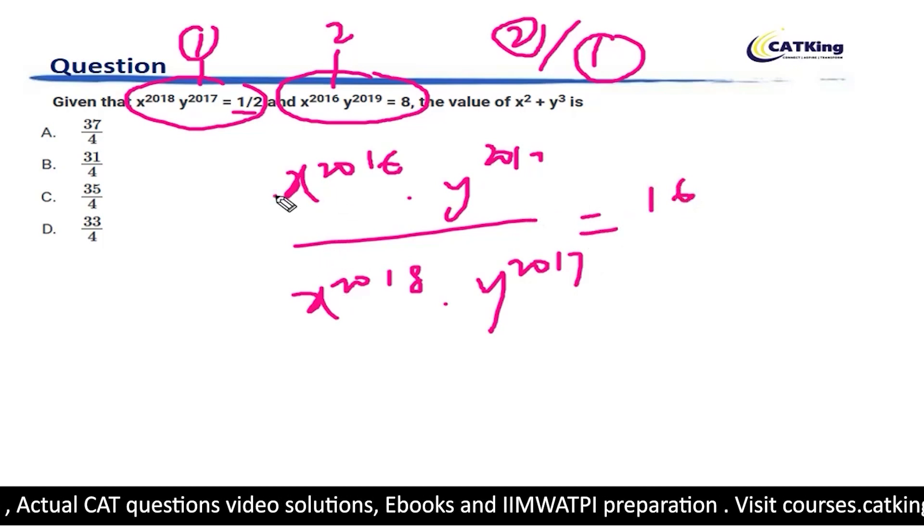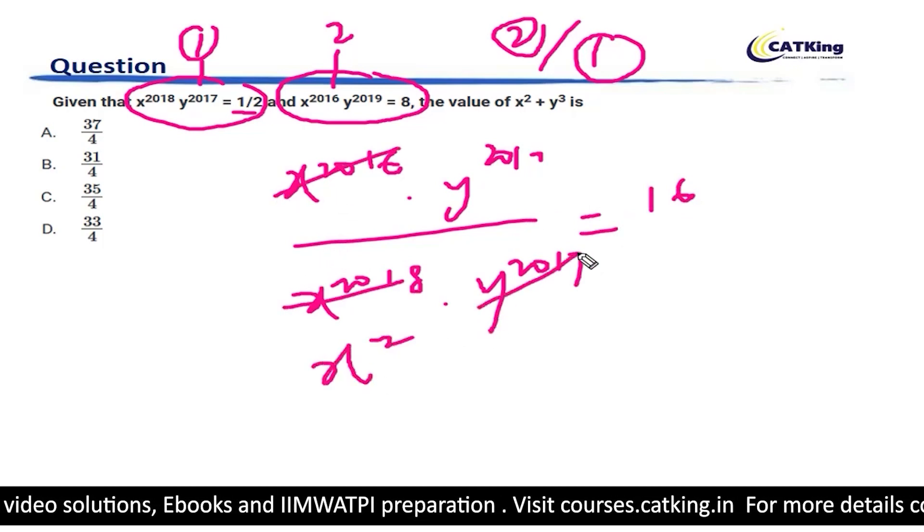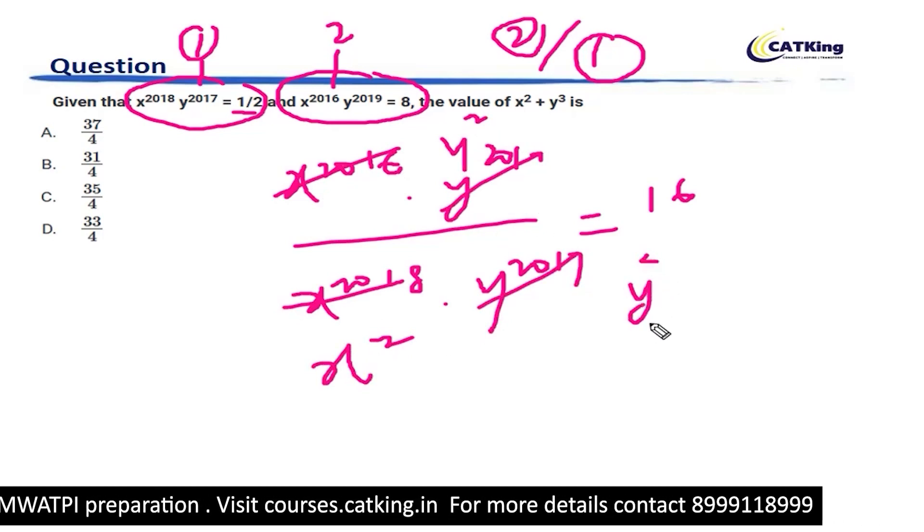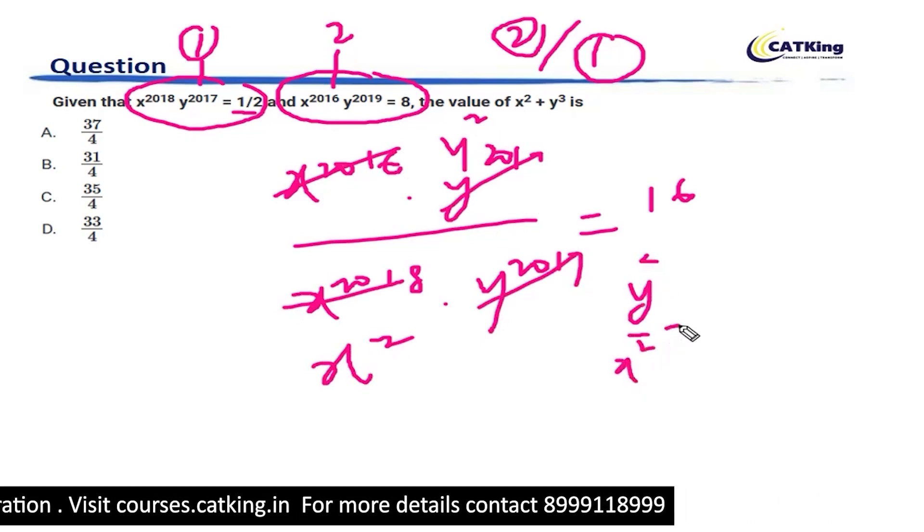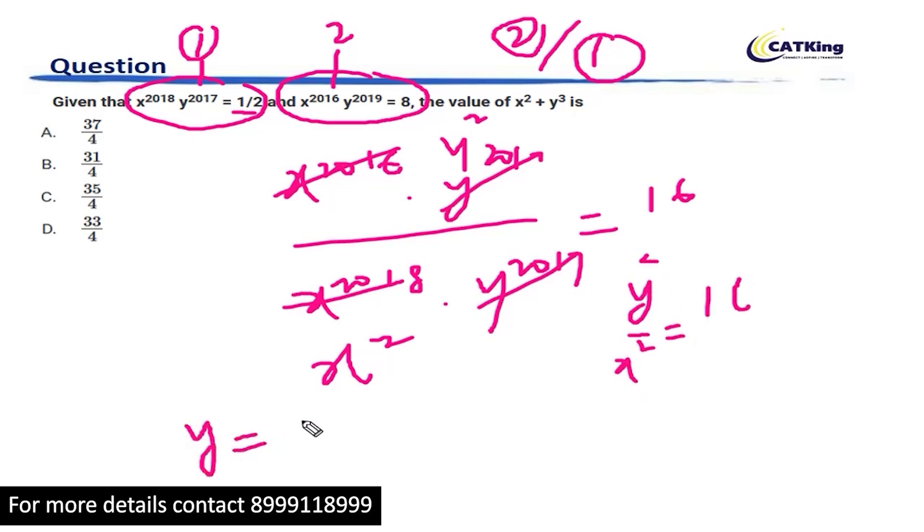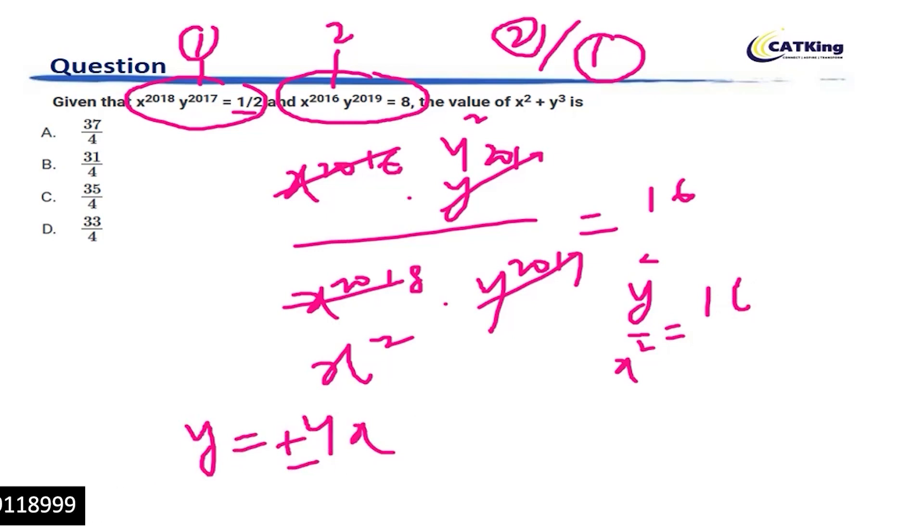So, now if you, this is x square and this is y square. So, y square upon x square is equal to 16. So, we can say that y is equal to 4x. So, y will be plus minus 4x but we will take only positive 1.